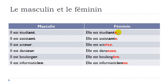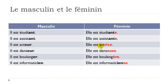Now the tricky ones — the irregular forms. Il est acteur. The ending -EUR becomes -RICE, so acteur becomes actrice. Elle est actrice.